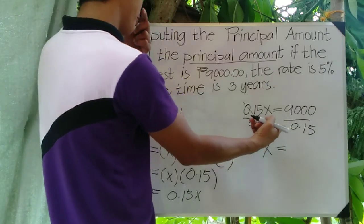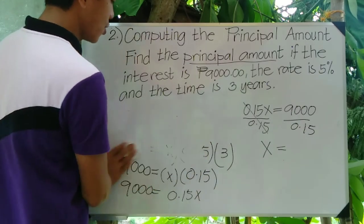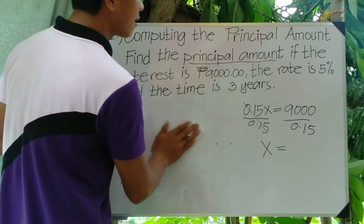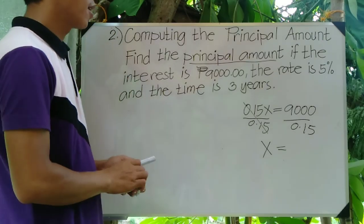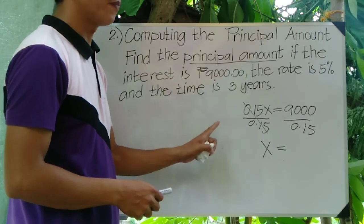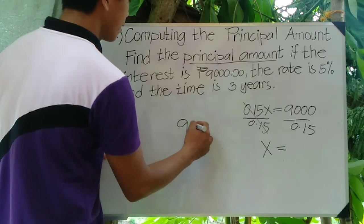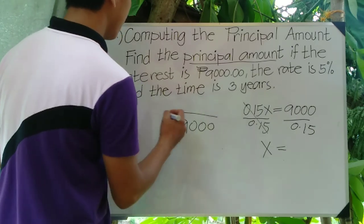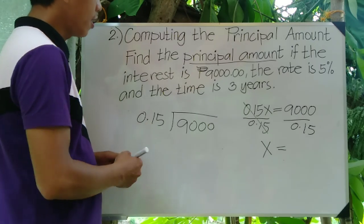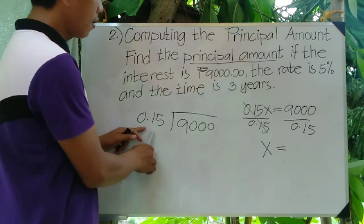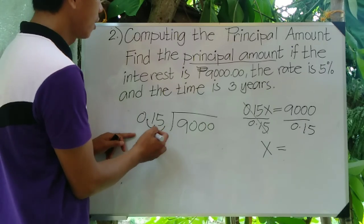Let me show you how to divide that hands-on, because in exams like the civil service exam or university entrance exams, calculators are not allowed. We have 9,000 divided by 0.15. Since our divisor is a decimal, we move the decimal point two places to the right: one, two.